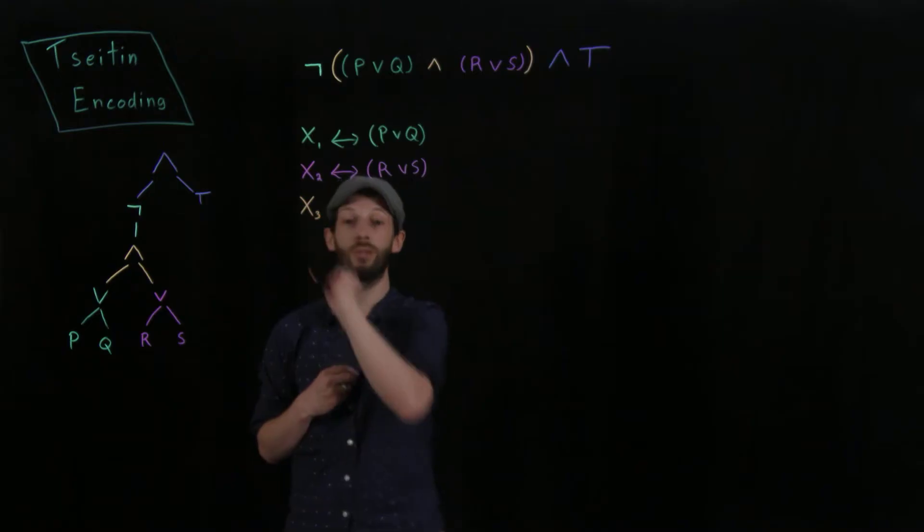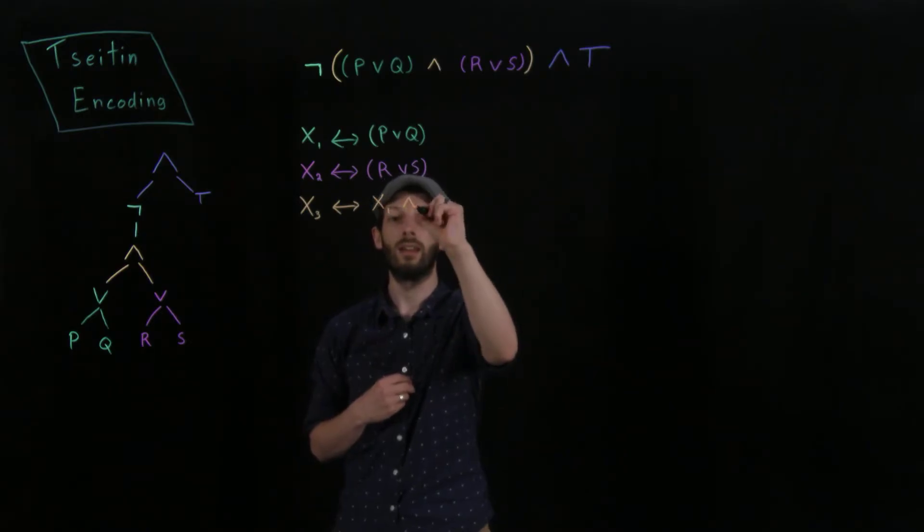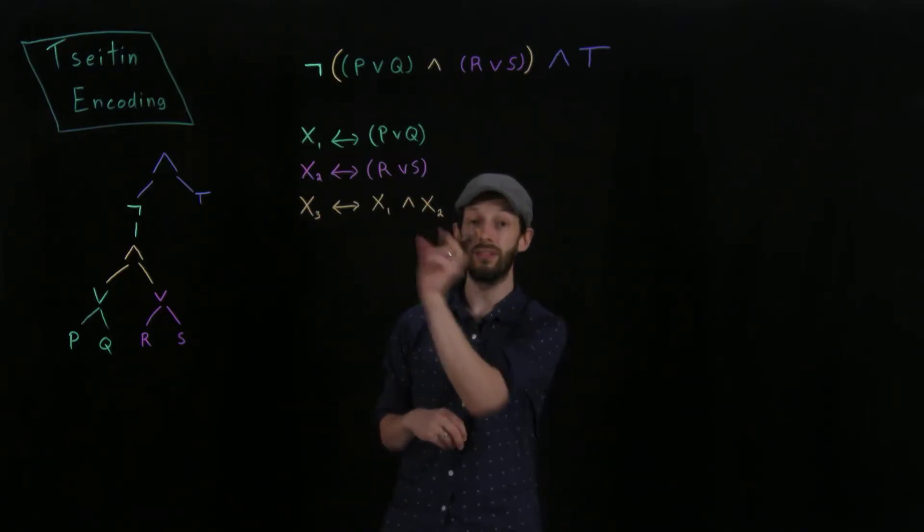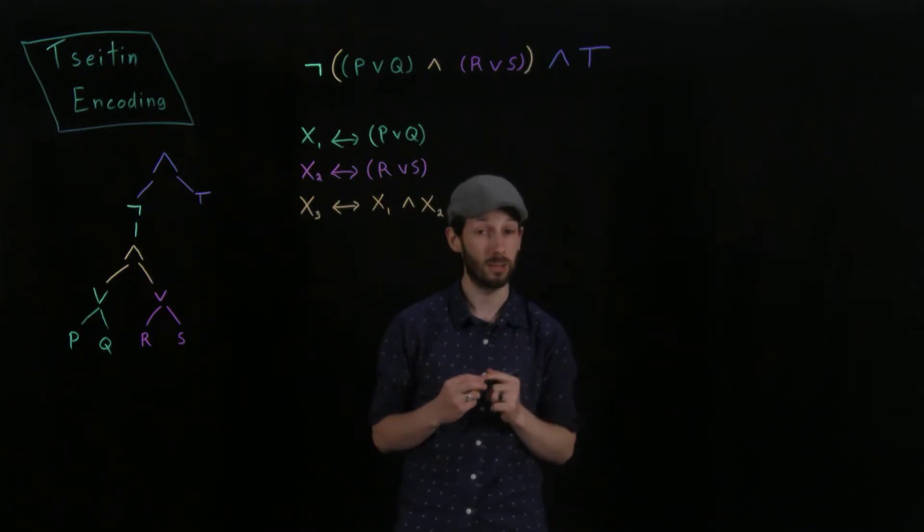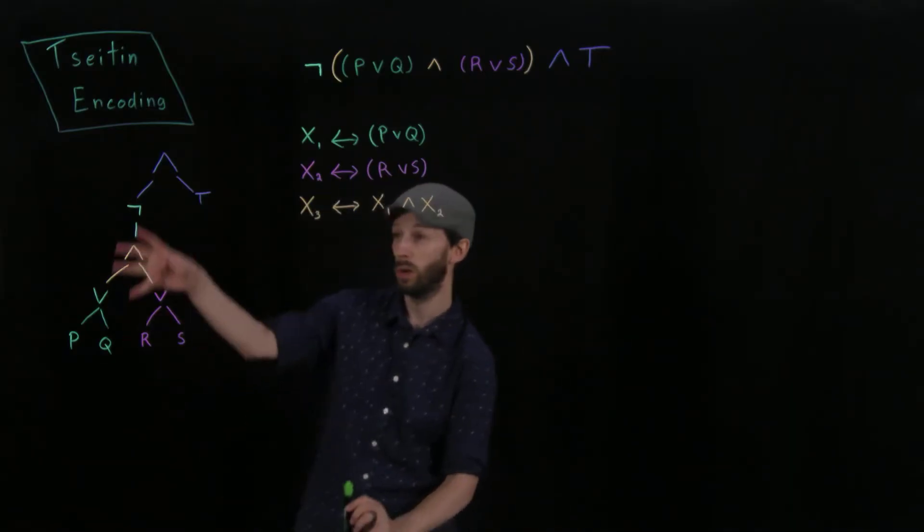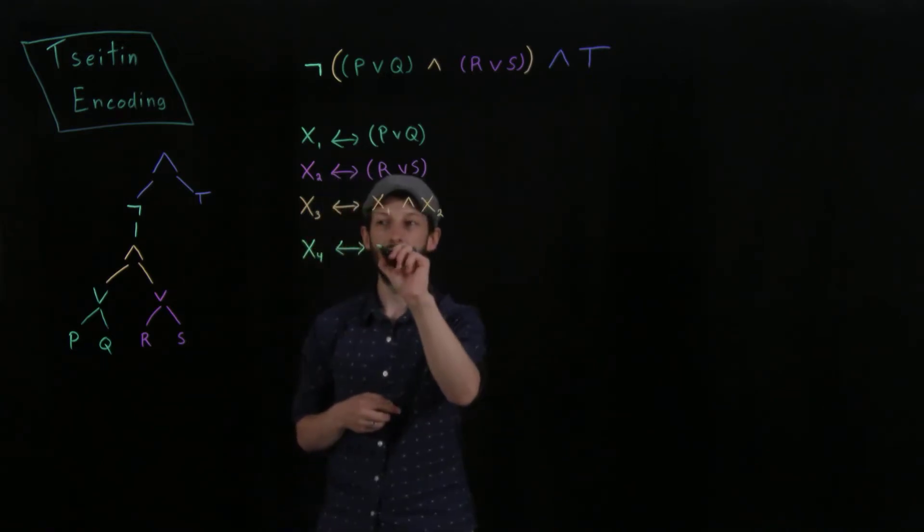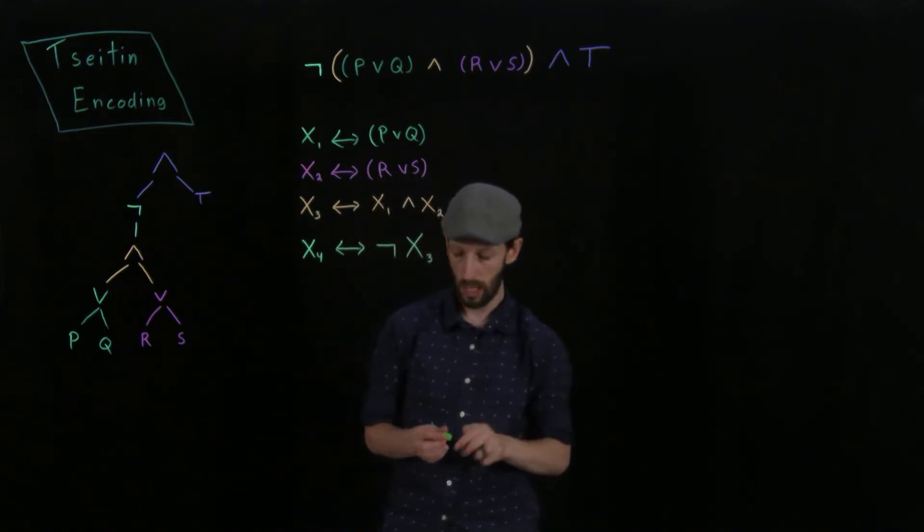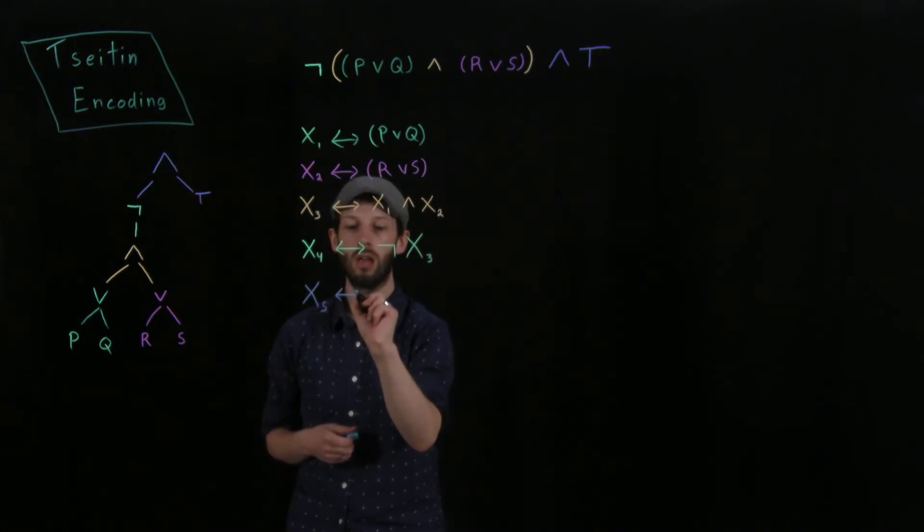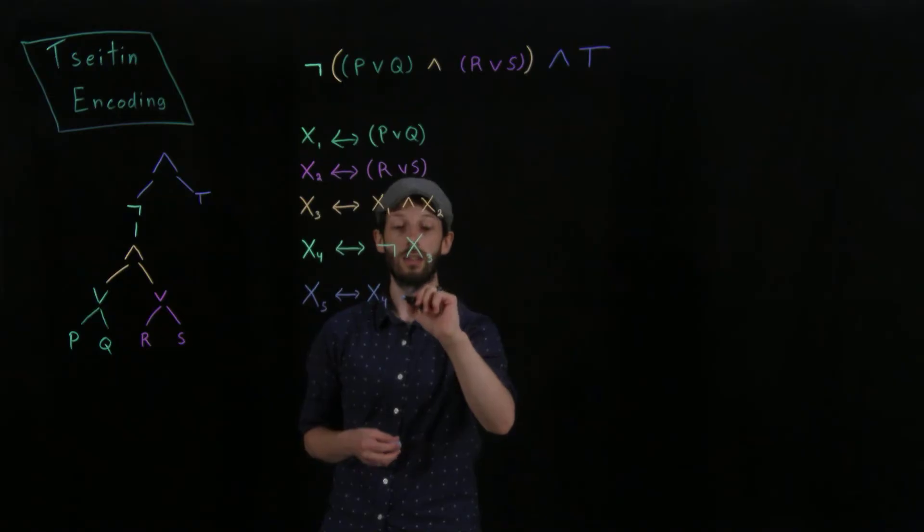So x3, our third auxiliary variable, is going to hold if and only if x1 and x2 hold, right? So now we're introducing the auxiliary variables in the definition for other auxiliary variables, and this is the trick that we get to play. All of these auxiliary variable definitions are very, very, very small and compact. And so we continue this process. If we work our way up the tree here, we have x4 holds if and only if the negation of x3 holds. And finally, our fifth auxiliary variable holds if and only if, what do we have here, x4 and T hold.